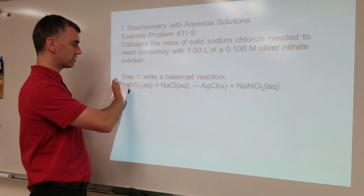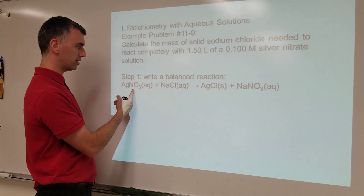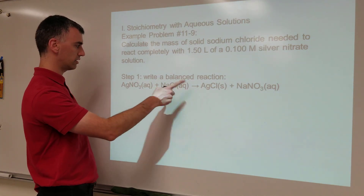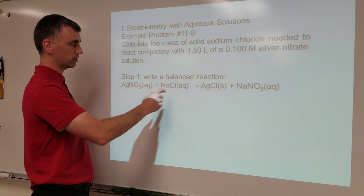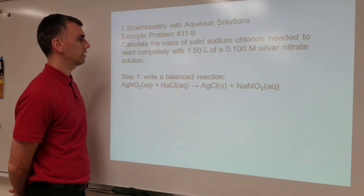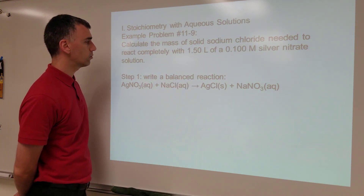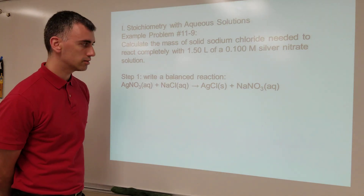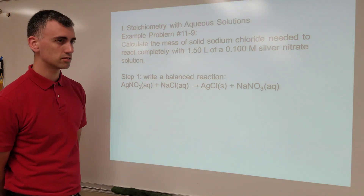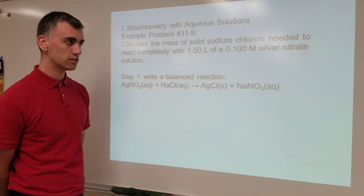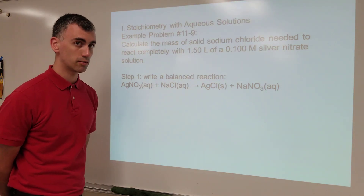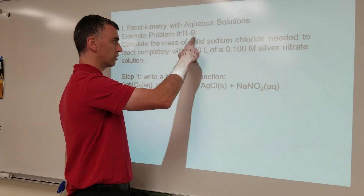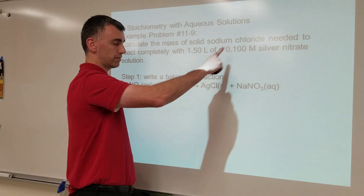You'll notice the equation is already balanced as written: one silver, one silver; one nitrate, one nitrate; one sodium, one sodium; one chlorine, one chlorine. Now once you've got that, this is what stoichiometry is — you'll use stoichiometry when trying to relate one chemical with a different chemical.